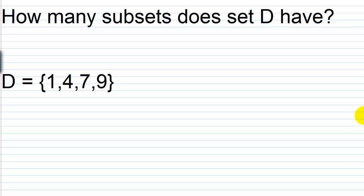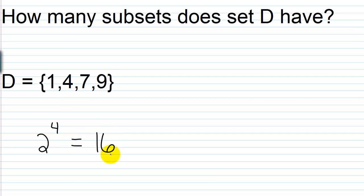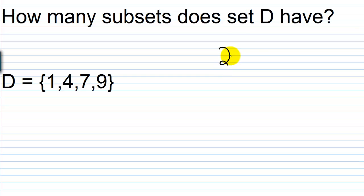How many subsets does set D have? Using our formula, set D has elements one, four, seven, and nine — four elements. So we raise two to the fourth power, because we take two and raise it to the number of elements we have. Two to the fourth power is 16. Let's go through and list them to verify this.